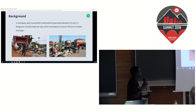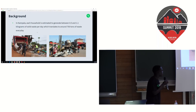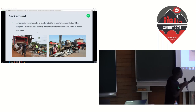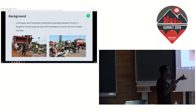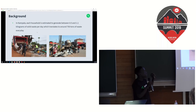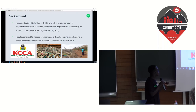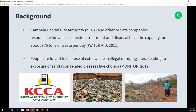According to local authorities, it's estimated that almost 750 tons of waste are generated every day in Kampala. The local authority mandated to collect and dispose of this waste is called Kampala Capital City Authority. It leases part of its mandate to private companies, but all these companies combined only have a capacity of collecting 375 tons — almost a deficit of 400 tons every day. That's a very big problem.